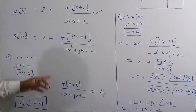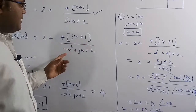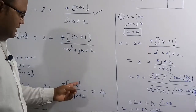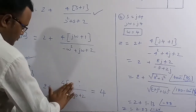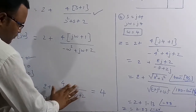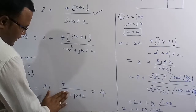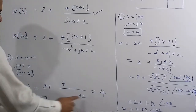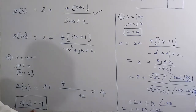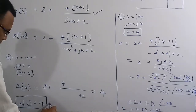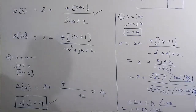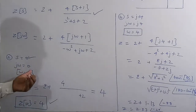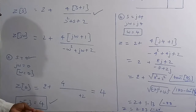At ω=0: Z(0) = 2 + 4(0+1)/(−0+0+2) = 2 + 4·1/2 = 2 + 2 = 4. Therefore Z(0) = 4Ω. This is the impedance at s=0, meaning at DC. When a DC source is applied, the impedance of the circuit is 4Ω.